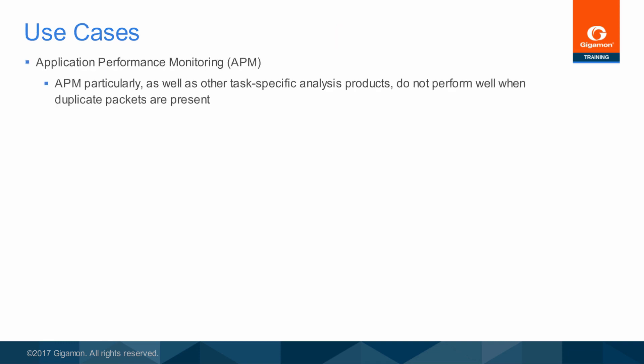Some common scenarios where you would implement deduplication include application performance monitoring and when using network or forensic recorders. A variety of network monitoring and analysis tools, particularly application performance monitoring products, perform poorly when there are duplicate packets present, causing them to report inaccurate test results. It is often worthwhile to have a visibility fabric deduplicate traffic prior to reaching tools such as APM analyzers, simply because of the negative effects of the analyzer tool performing the deduplication itself.